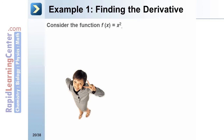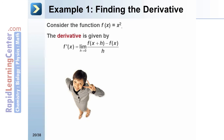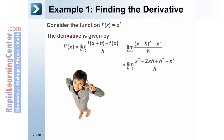We are now ready to do an example finding the derivative. Consider the function f(x) = x². The derivative is given by f′(x) = the limit as h approaches 0 of [f(x + h) − f(x)] / h. We take the expression x + h and substitute it in for x in f(x), so we evaluate f at x + h. Substituting into x² gives us (x + h)² − x², all divided by h.